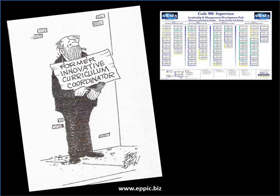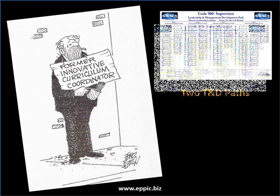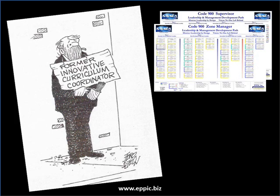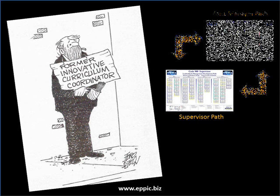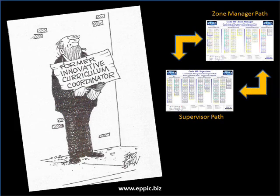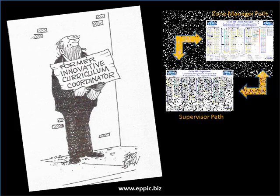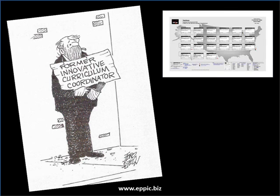This path was for supervisors at a United States Navy shipyard. However, this project produced two paths — one for the supervisors and another path for the zone managers. The concept was that the learning path, the learning curve, involved going from a supervisor's job to the zone manager's job. This next path was produced in a project that involved the development of seven training and development paths.